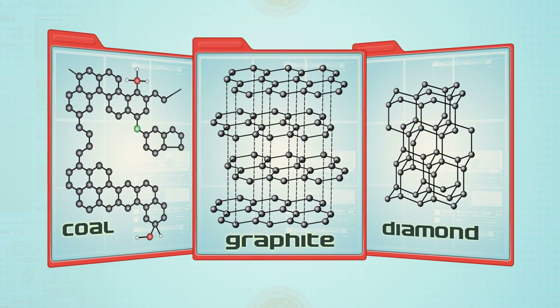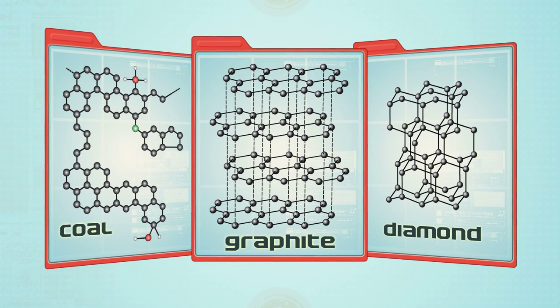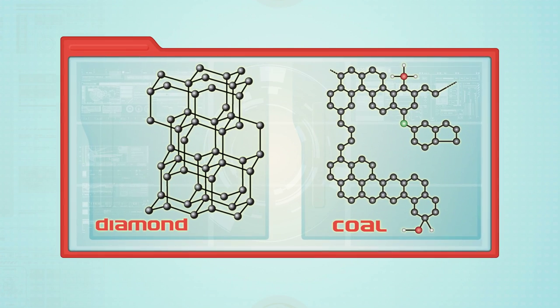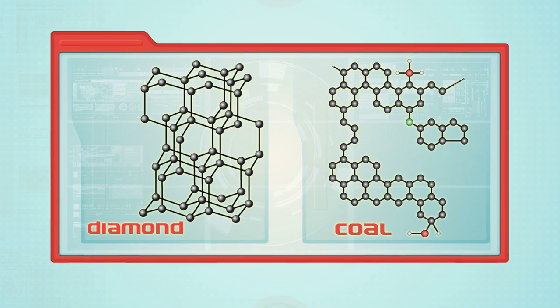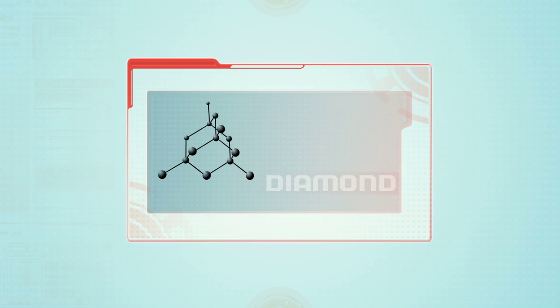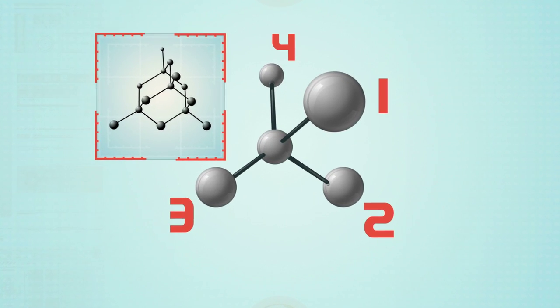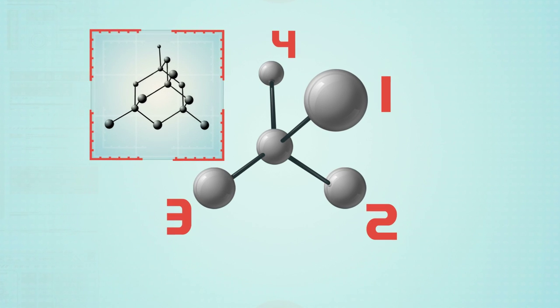The way atoms are connected to each other in solid materials has a huge impact on their overall properties. A diamond and a piece of coal are so different that you would never guess that they're both made out of the same element, carbon. In diamond, each carbon atom is connected to four other carbons. This is a very strong arrangement that makes diamonds one of the hardest known materials.